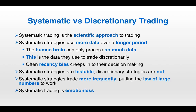Systematic strategies trade more frequently, putting the law of large numbers to work. The law of large numbers states that as the sample size grows, the mean of the sample will approach the true mean — the true expectation. So if you're trading a systematic strategy, you can reach statistical significance regarding what the true mean is much sooner than with a discretionary trading strategy.